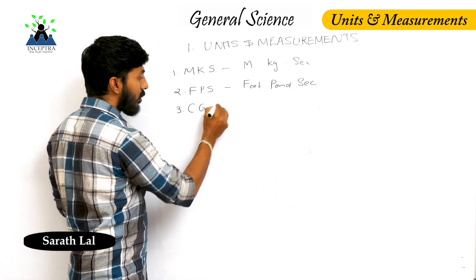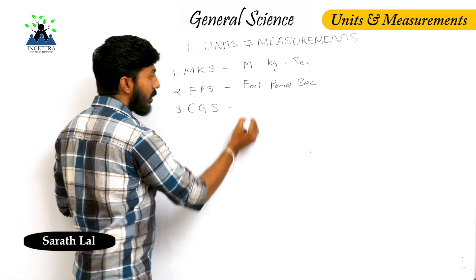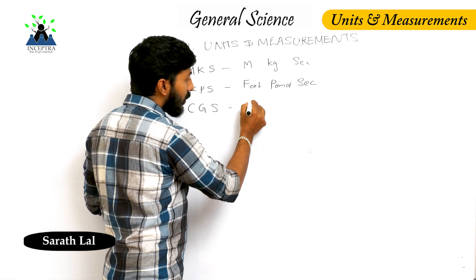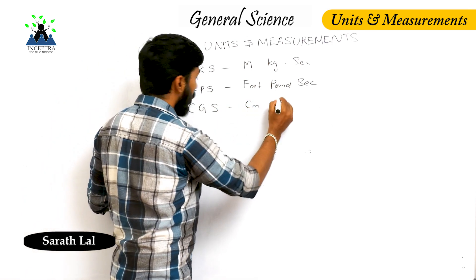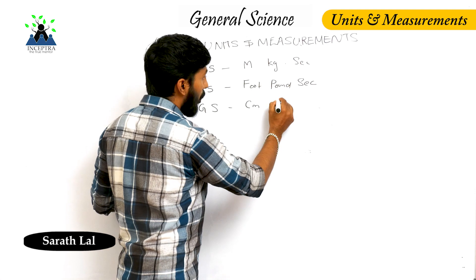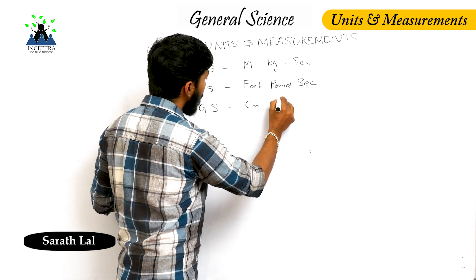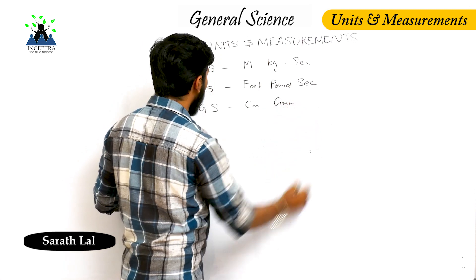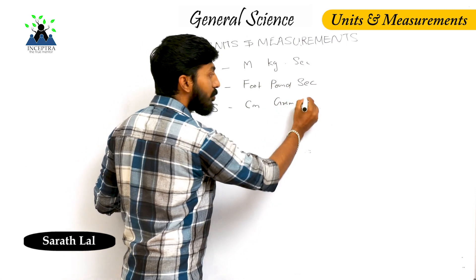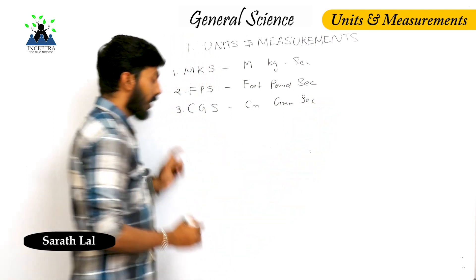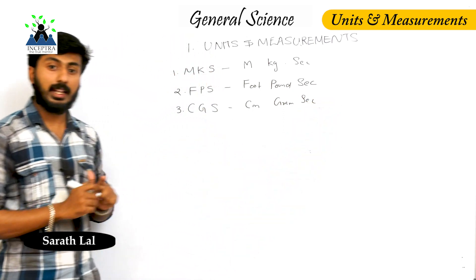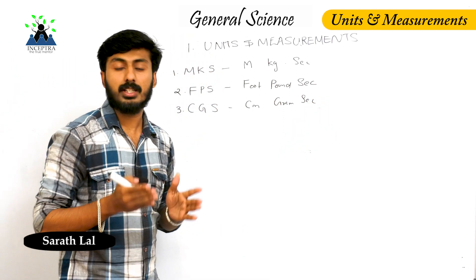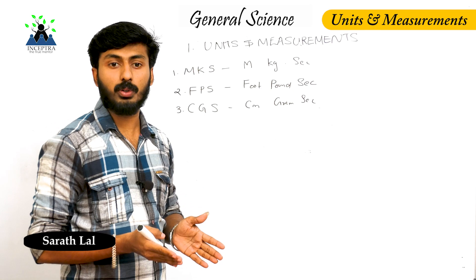In the CGS system, the length measuring unit is centimeter, the mass measuring unit is gram, and the time measuring unit is second.